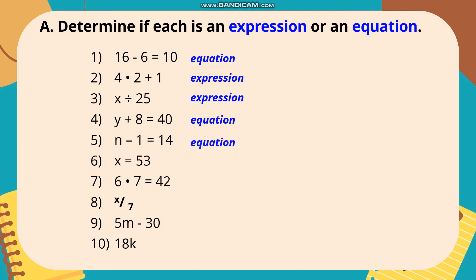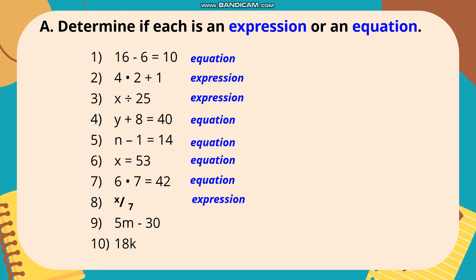Number 7: 6 times 7 equals 42. Answer: Equation. Number 8: X divided by 7. Answer: Expression. Number 9: 5M minus 30. Answer: Expression. Number 10: 18K. Answer: Expression.